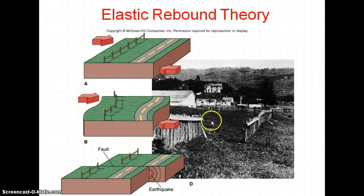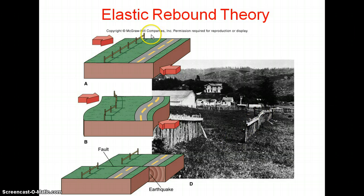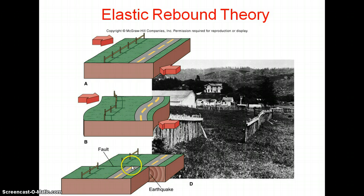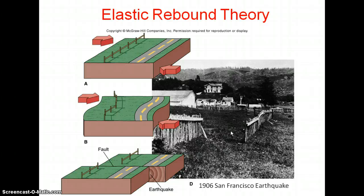This also shows the elastic rebound theory. Here you can see the fencing. After the elastic rebound occurs, the fencing will be like this — actually the fencing will be in this way. Again when earthquake occurs, it moves this way, and again it rebounds to its original position. The fencing remains the same but due to the faulty region, it moves. You can view the earthquake effects in San Francisco.